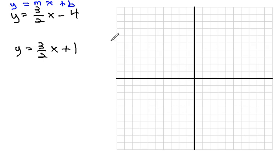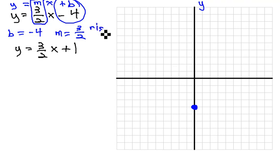In the first equation, 3 halves x minus 4, we can see b, or where this graph is going to start, is at negative 4. So I'll put that on my graph, negative 4 on the y axis. And m, my slope, is 3 halves, which represents a rise of 3 and a run of 2.